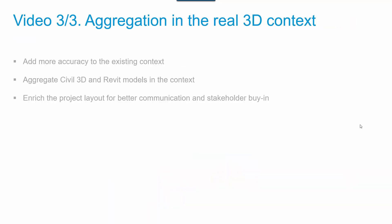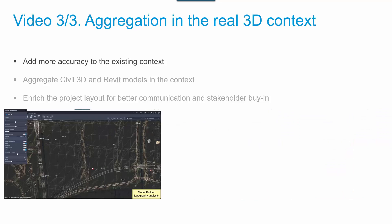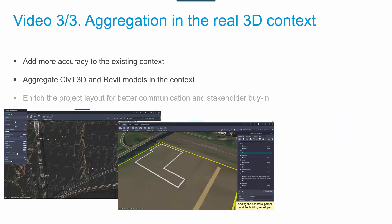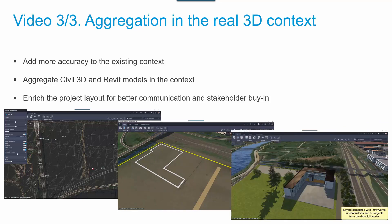The last video, video number 3, is about aggregation in the real 3D context. You will see how to add more accuracy to the existing context, how to aggregate Civil 3D and Revit models in the context, and how to enrich the project layout for better communication and stakeholder buy-in.